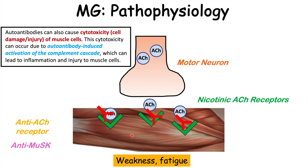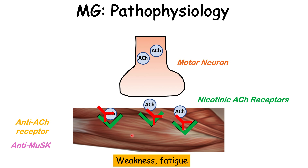Other autoantibodies can bind to other parts of the muscle, also preventing proper contraction, ultimately leading to muscle weakness and fatigue. Furthermore, as a patient goes through the day and continues to try to contract their muscles, the motor neuron starts to deplete its acetylcholine neurotransmitter, leading to less and less acetylcholine being released and less competition for those autoantibodies. So those autoantibodies start to win the battle, and as the day goes on the patient becomes weaker and weaker.